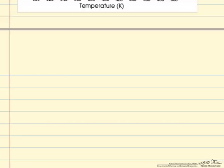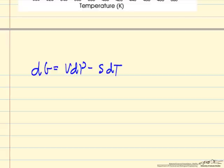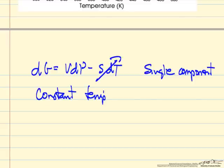Now we want to look at this same starting equation for single component at constant temperature, which means this term goes to zero. The change in Gibbs free energy is VdP.